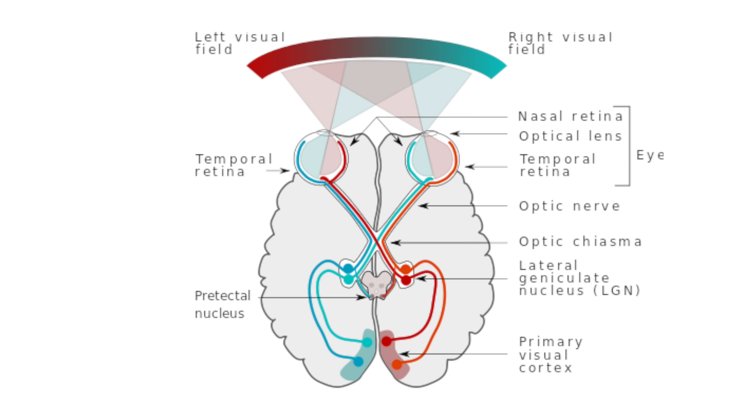Understanding the LGN and its function has been key for understanding and potentially treating visual disorders. Damage to the LGN can lead to visual field defects where parts of the visual field are lost, because the LGN is a relay station for visual information — if it's damaged, that information can't get through.